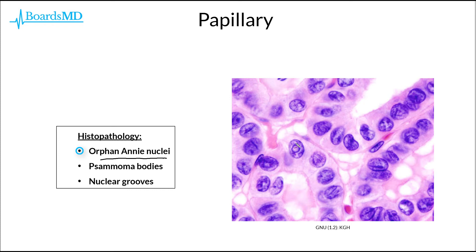These patients may also have psammoma bodies histopathologically, which will be shown in the coming slides. And last but not least, we can see nuclear grooves in our patients with papillary cancer. We can see a couple of examples of this — for example, here where you can see this linear groove, or nuclear groove, and this is highly classic for papillary carcinoma of the thyroid.